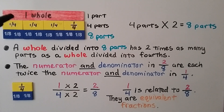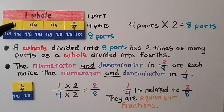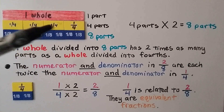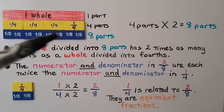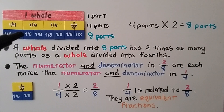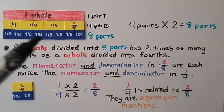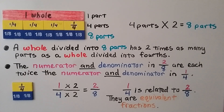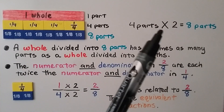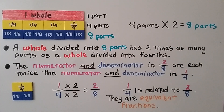Here we have a red bar that's one whole. Here we have four parts for fourths — there are four fourths. And here are eight parts — it's eight eighths. A whole divided into eight parts has two times as many parts as a whole divided into fourths. Four parts times two equals eight parts. The numerator and denominator in two-eighths are each twice the numerator and denominator in one-fourth.